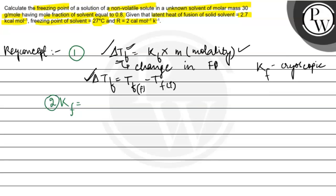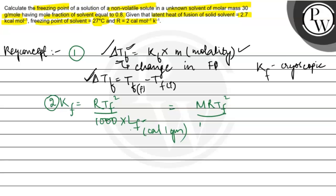Second formula jo hai, woh Kf ka hai: Kf = R·Tf² / (1000 × Lf). Yahan Lf hota hai latent heat of fusion — agar yeh calorie per gram mein diya ho. Lekin agar yahan mole mein diya hai toh aap isko molar mass se divide karoge, toh isse aise likh sakte hain: Kf = M·R·Tf² / (1000 × ΔHf). Toh yahan jo equation mein diya hua hai, that is ΔHf. Toh hum log pehle given likh lete hain.